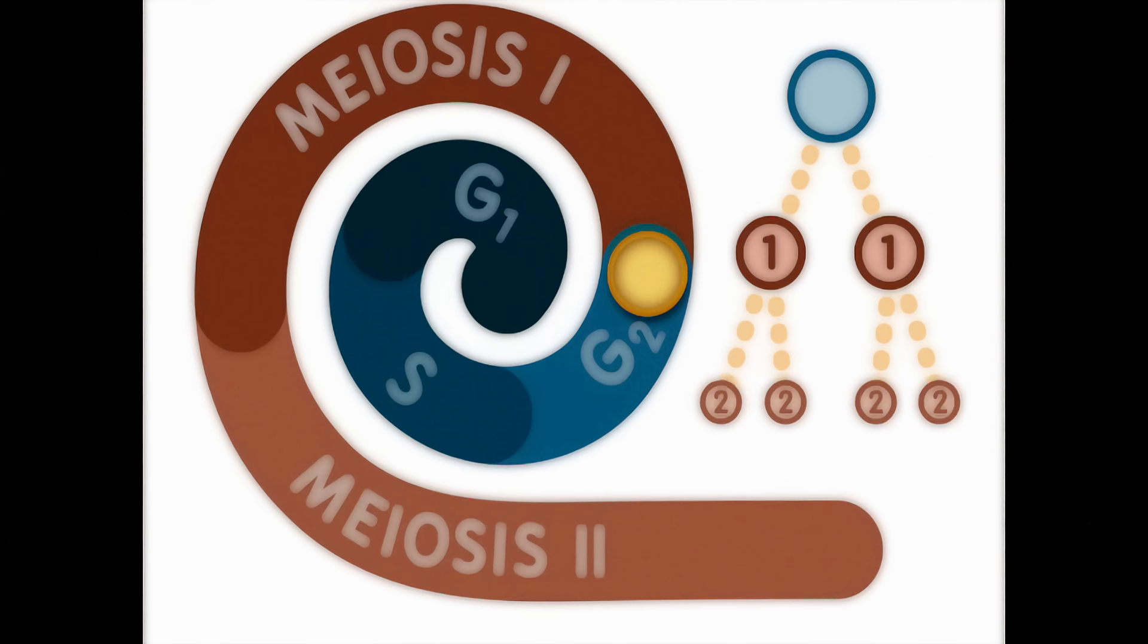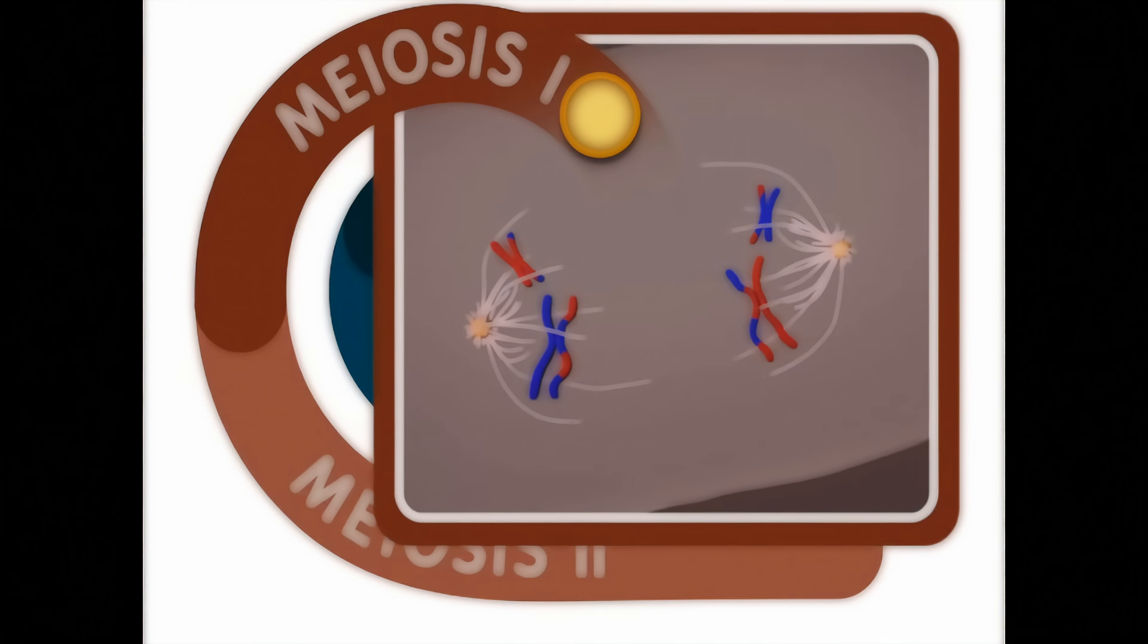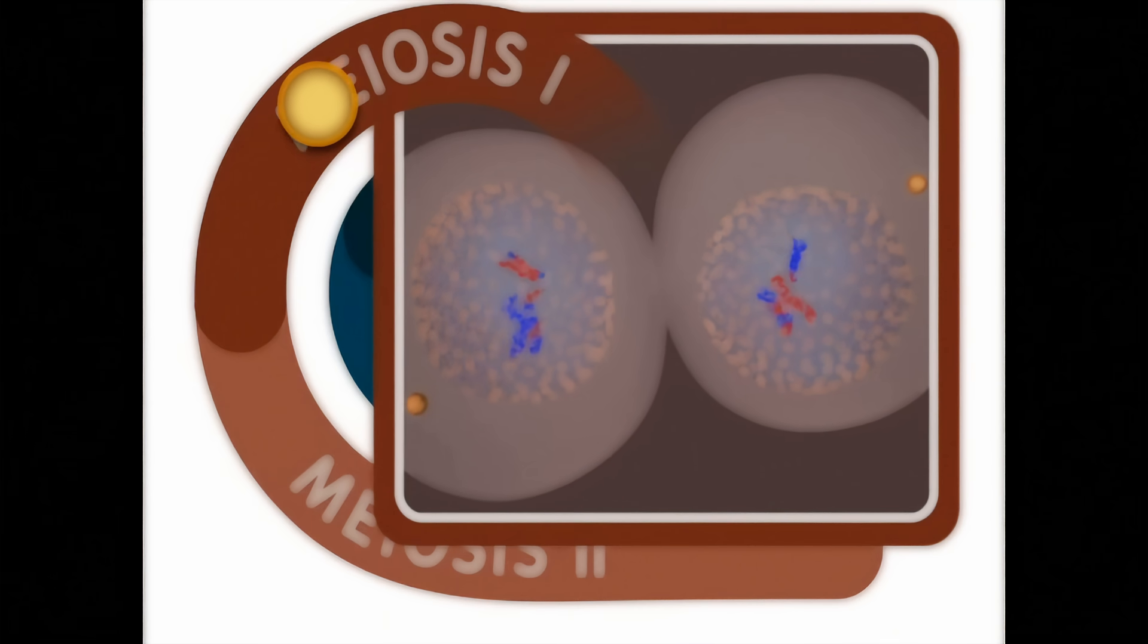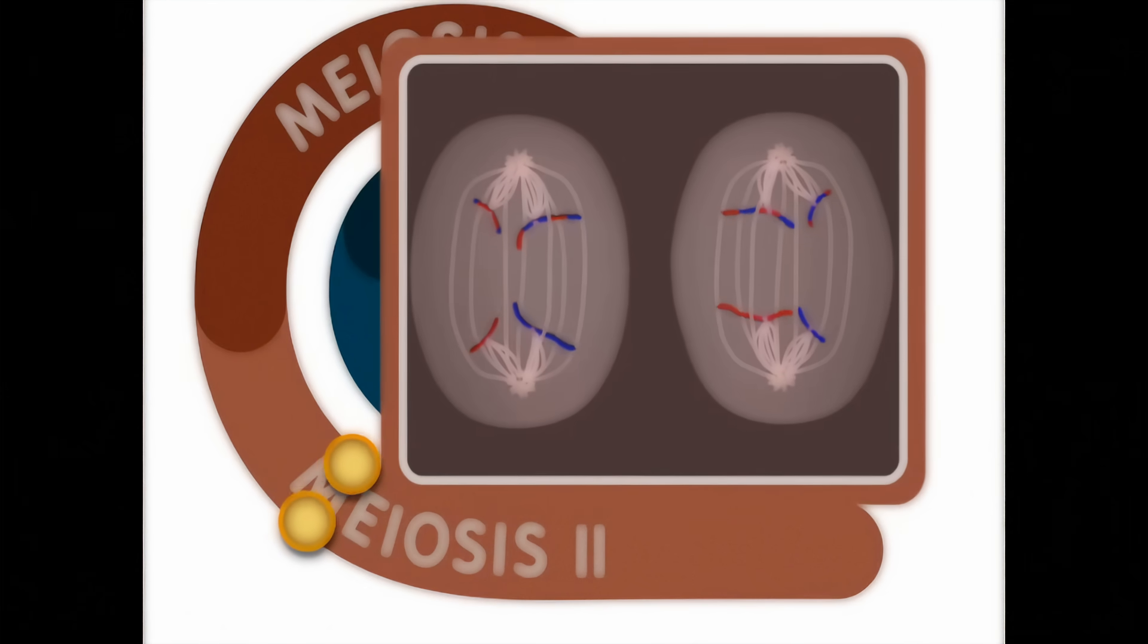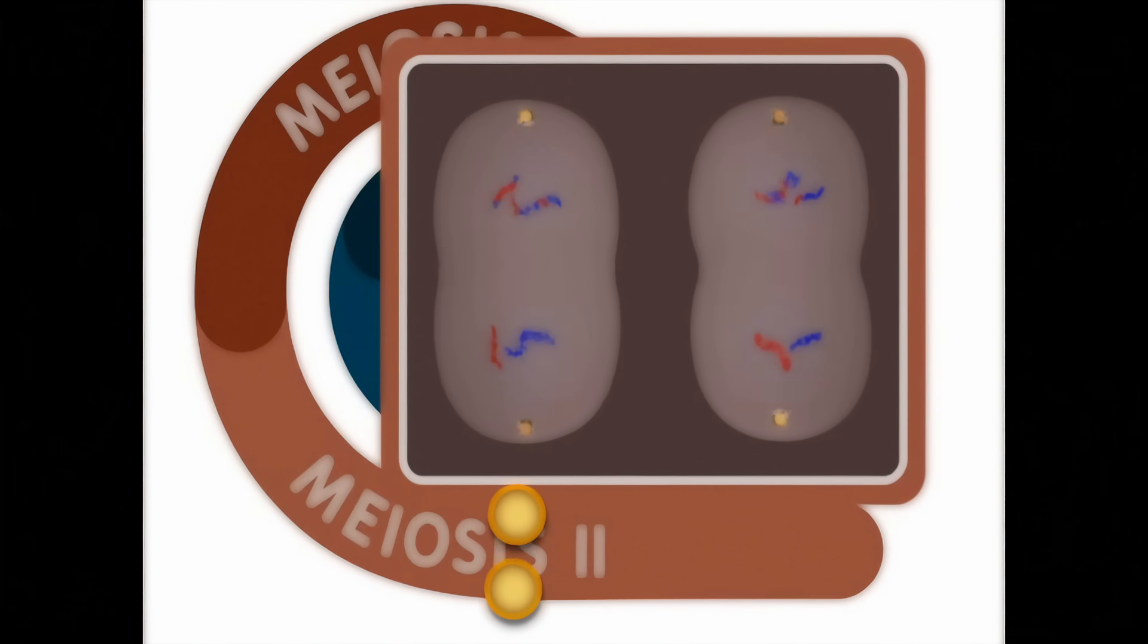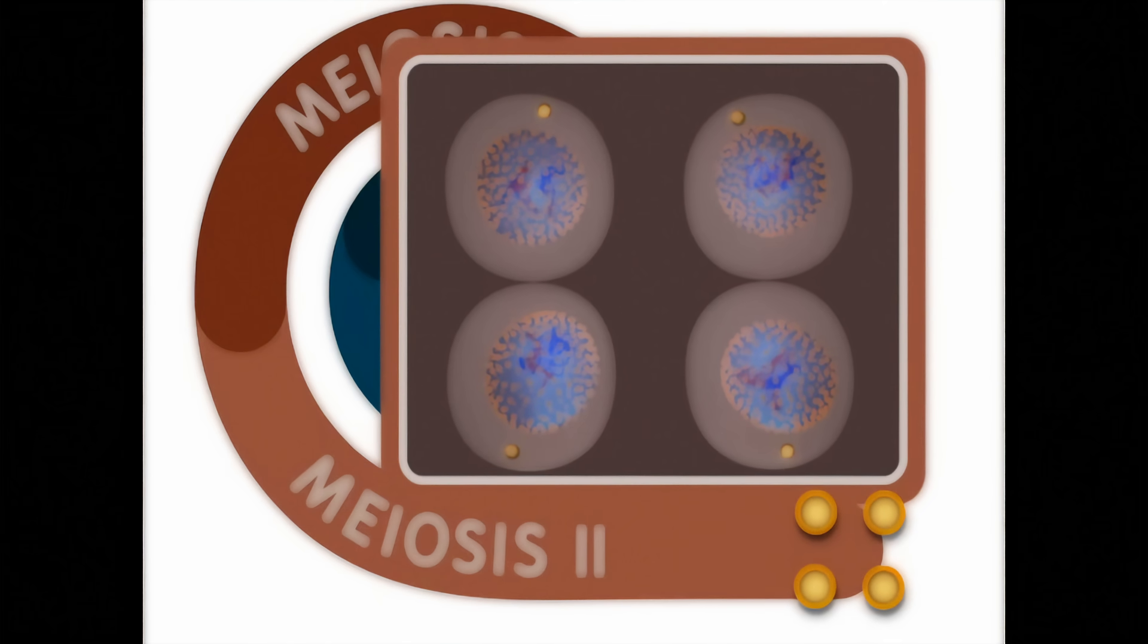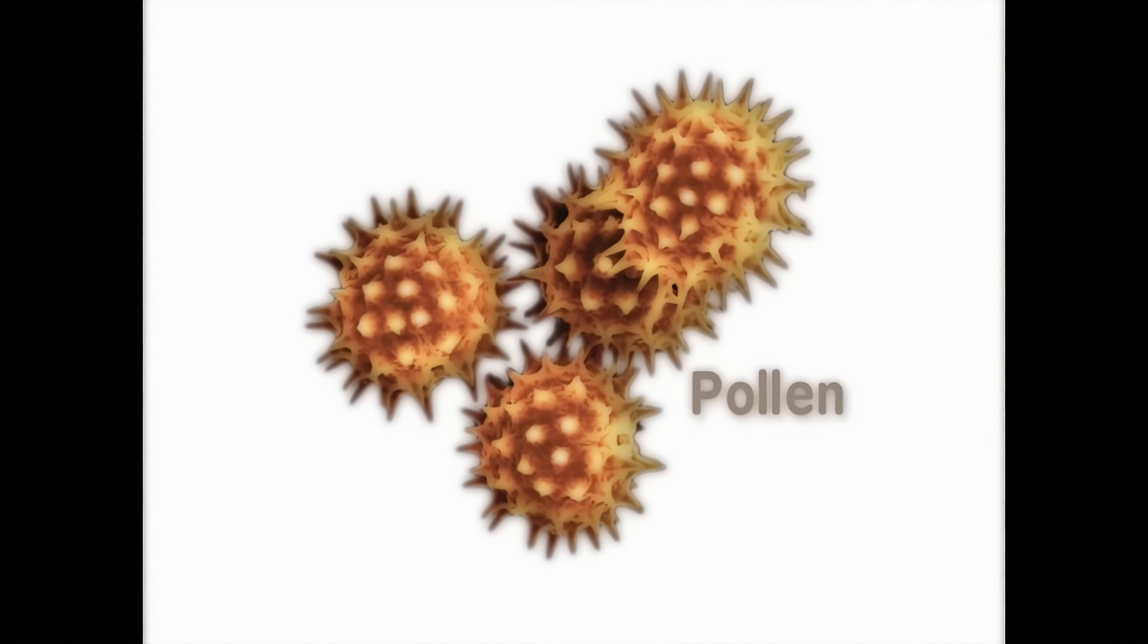There are two cell division events during meiosis. The first division, meiosis I, results in two unique daughter cells that have half the amount of DNA as the parent germline cell. The second division, meiosis II, results in four unique haploid cells that only have one copy of each chromosome. These haploid cells are the gametes that could go on to produce an offspring through sexual reproduction.